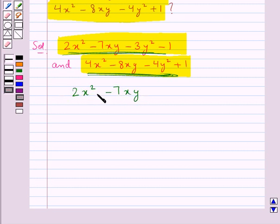So we first write the given expression 2x² - 7xy - 3y² - 1. Now the expression to be subtracted would be written below this expression in such a way that the like terms occur one below the other. So 4x² would be written below 2x², then -8xy below -7xy, -4y² below -3y², and +1 below -1.